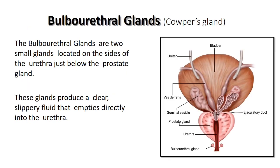The bulbo-urethral glands, also called Cowper's glands, are two small glands located on either side of the urethra, just below the prostate gland. Their function is to produce a clear, slippery fluid that drains into the urethra.